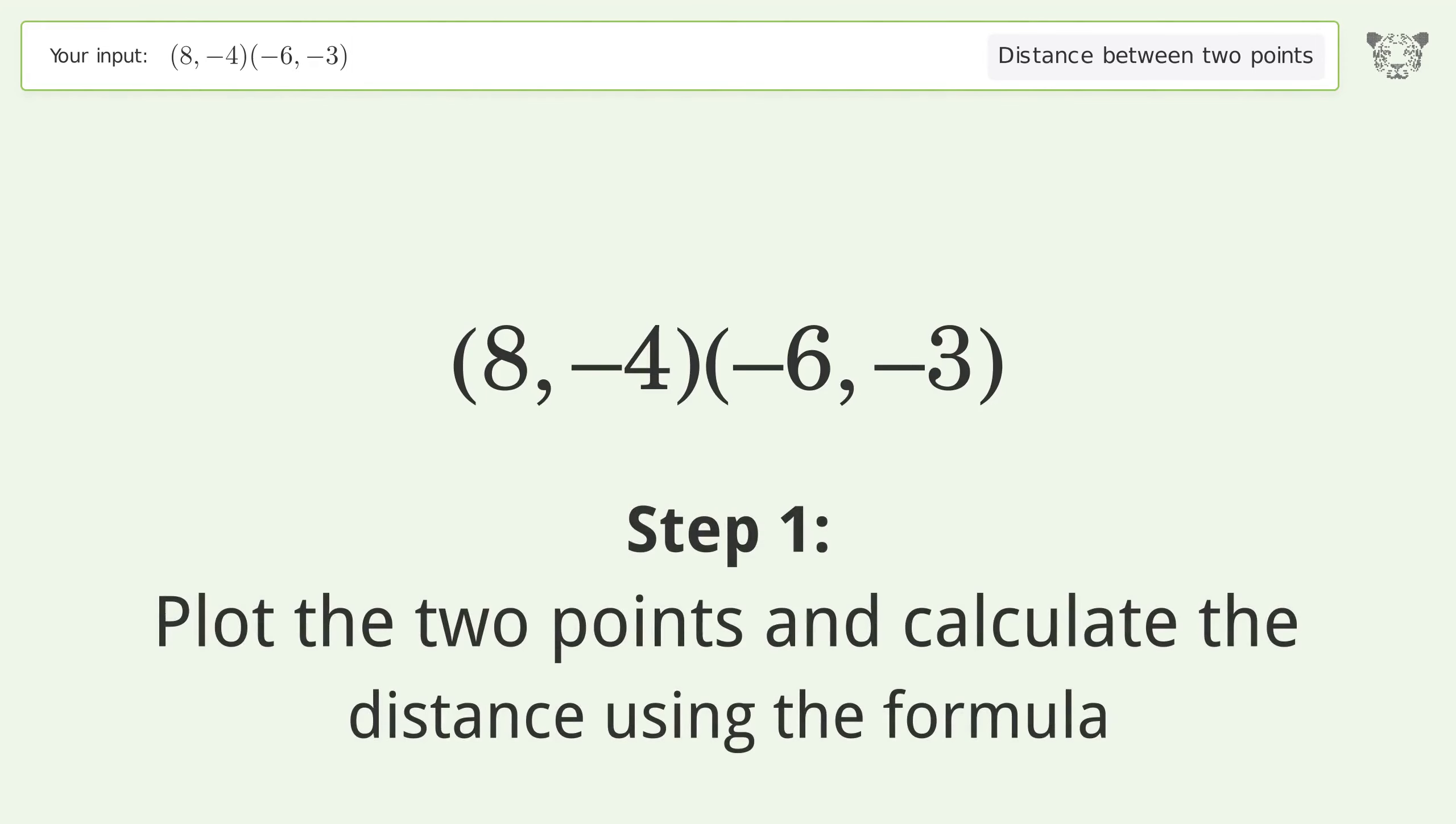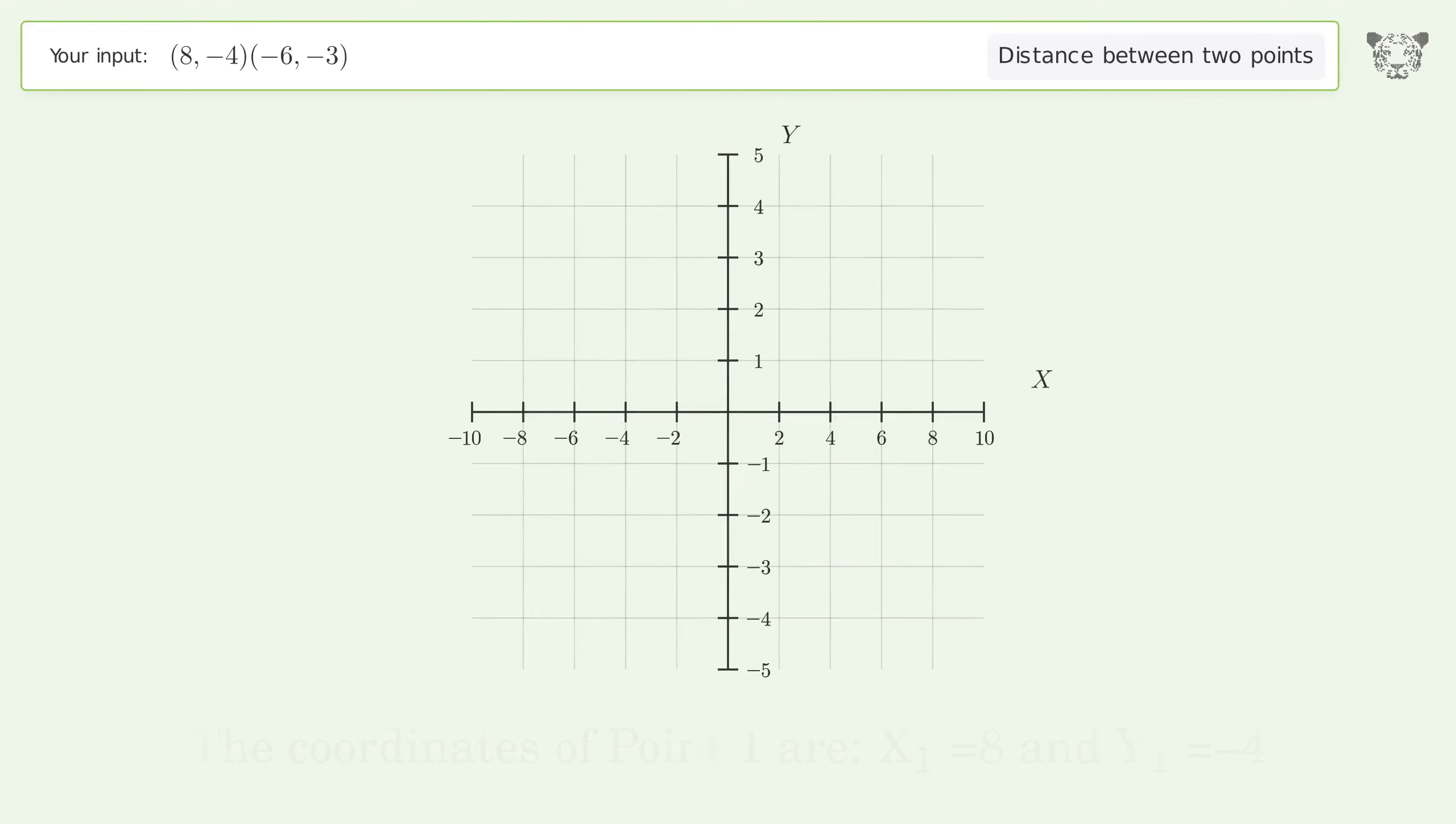Plot the two points and calculate the distance using the formula. The coordinates of point 1 are x1 equals 8 and y1 equals negative 4. The coordinates of point 2 are x2 equals negative 6 and y2 equals negative 3.